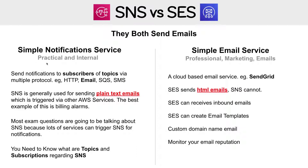A very practical use case for SNS that I use on Exam Pro is that any time anyone signs up, it sends me an email — an SNS email. I don't need it to be a beautiful email; I just want to know about it. That's why you only get plain text emails. The most common and best example of an AWS service triggering an SNS email is billing alarms, because usually the first thing you do in your account — and you should do — is turn on billing alarms so that you don't get overbilled. Most emails coming to you from AWS services are going to be through SNS.